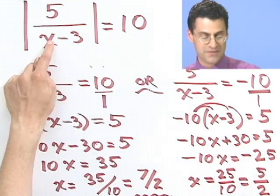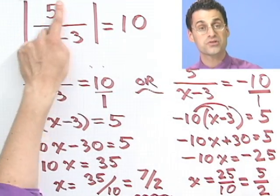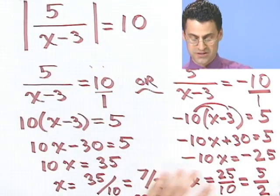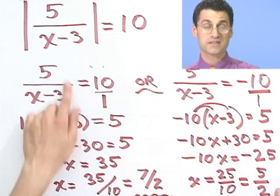And if you put in 5 halves here, you can check that this would actually produce negative 10. But since I'm taking absolute values, I'm still at 10. So in fact, there's always two solutions here when I have an absolute value of this kind.